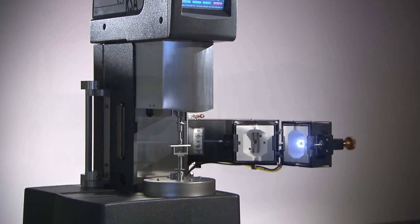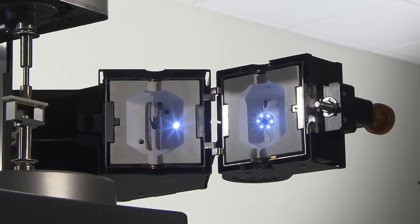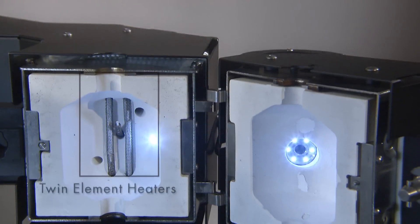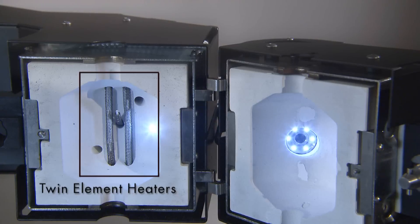RSA-G2 temperature is controlled using a high-performance forced convection oven, or FCO. Twin element heaters produce counter-rotating airflow for optimum temperature stability and extremely rapid heating and cooling over a temperature range of minus 150 to 600 degrees Celsius.